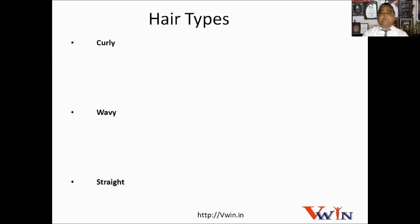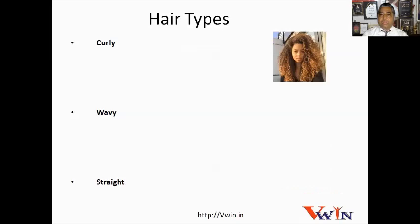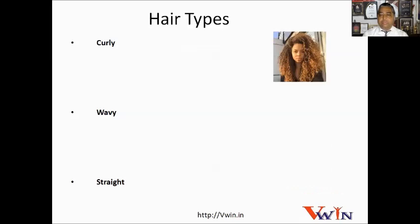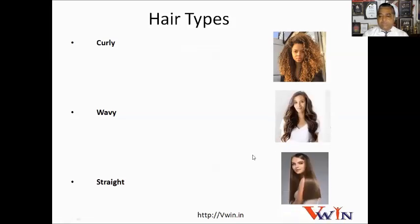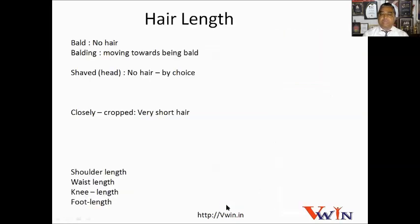Now let's talk about hair types. There are various hair types and looking at the pictures will make it clearer. Curly is this kind of hairstyle; wavy has waves in the hair; and straight hair, I don't need to explain. Next, based on hair length, you can also describe a person.